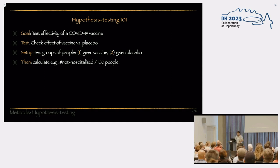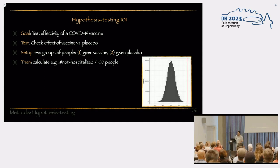And then we essentially calculate, for example, the number of not hospitalized people out of 100 people. And we get something like this. The gray curve is essentially the distribution of many groups of 100 people, and these are the numbers of people that did not get hospitalized out of 100 people. And the red column is the average of the people that did get the vaccine.